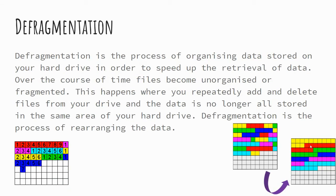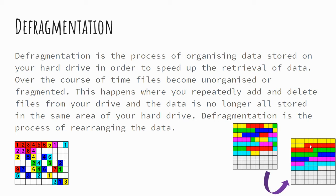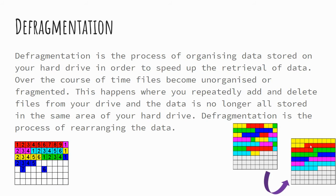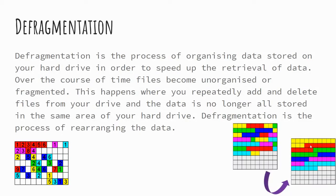Defragmentation is the process of reorganizing the data stored on your hard drive, with a view to speeding up the retrieval of that data. When you add files to your hard drive, they may not necessarily be added to a single block. Looking at the image on the bottom right, you can see that yellow, red, blue and so forth are fragmented or divided over the course of the hard drive. With files being separated this way, it can take quite a while for the computer to retrieve all of those blocks of data spread across the hard drive. Defragmentation reorganizes this data to make it much quicker to read and write from the hard drive.